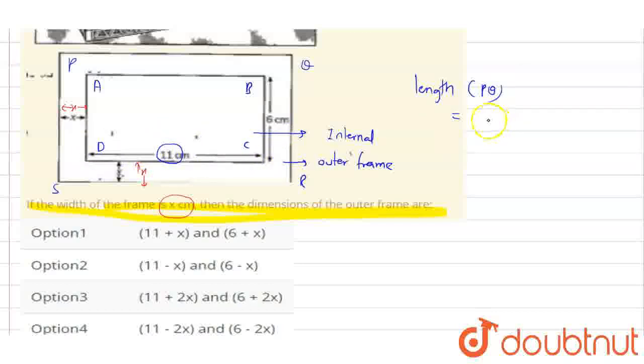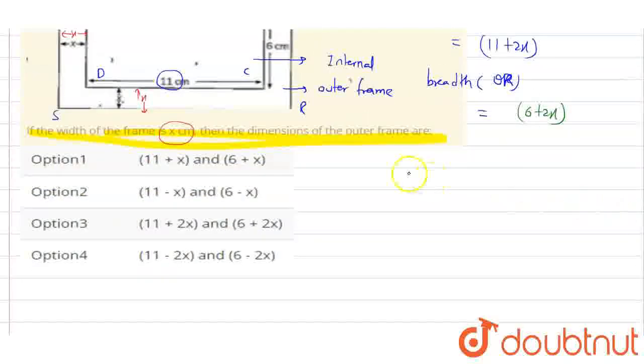And I'll talk about width, the width is QR. So the width is QR and QR is 6 plus 2X. In this way what are my dimensions? Dimensions of outer frame.